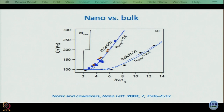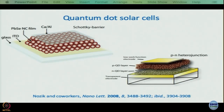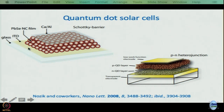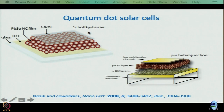That is what has made quantum dot solar cells very attractive. There are two kinds commonly studied: Schottky barrier and pn heterojunction. In a Schottky barrier device, you have glass ITO — ITO is a transparent electrode so light can enter — then a semiconductor nanoparticle film, and then the other electrode, calcium-aluminum, which gives you the Schottky barrier. In the other type you have a pn junction: a p-type quantum dot layer, an n-type quantum dot layer, and the rest is pretty much the same.